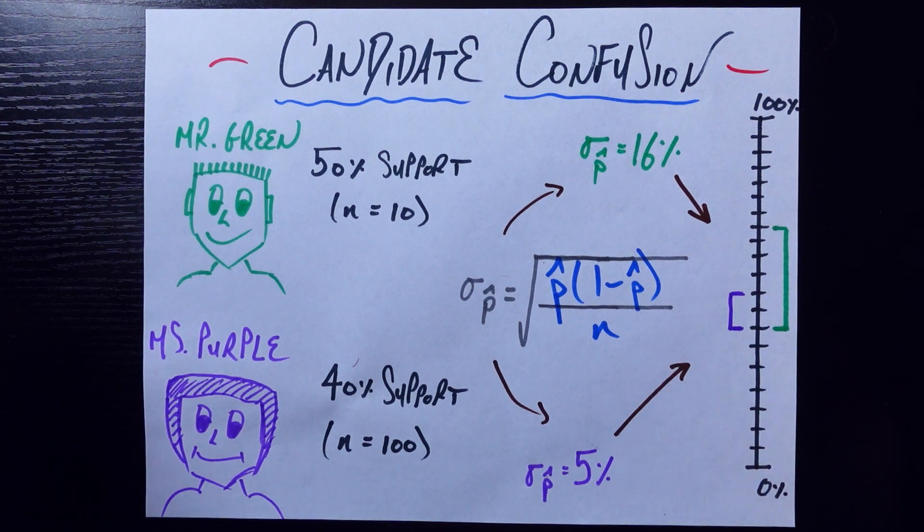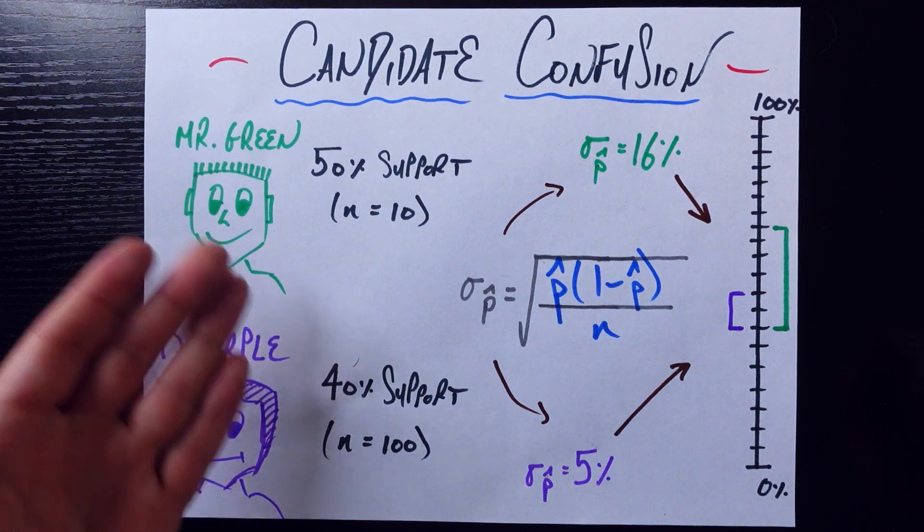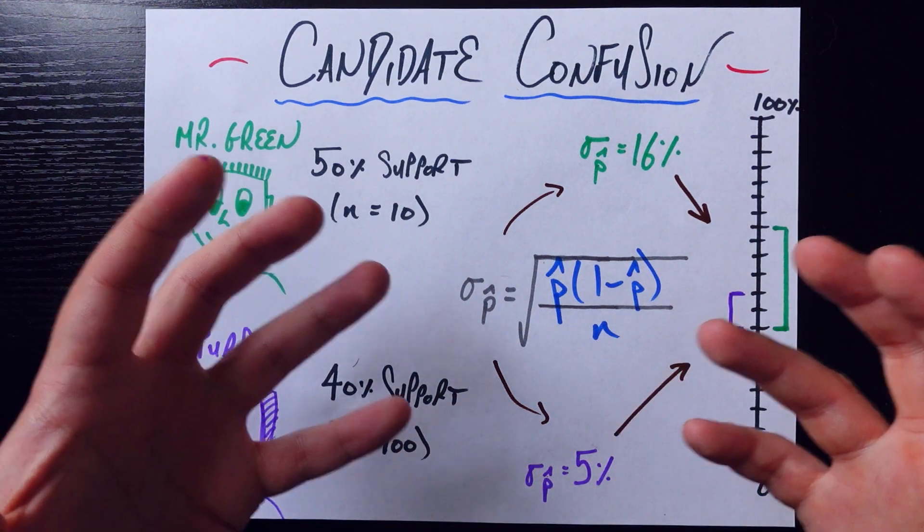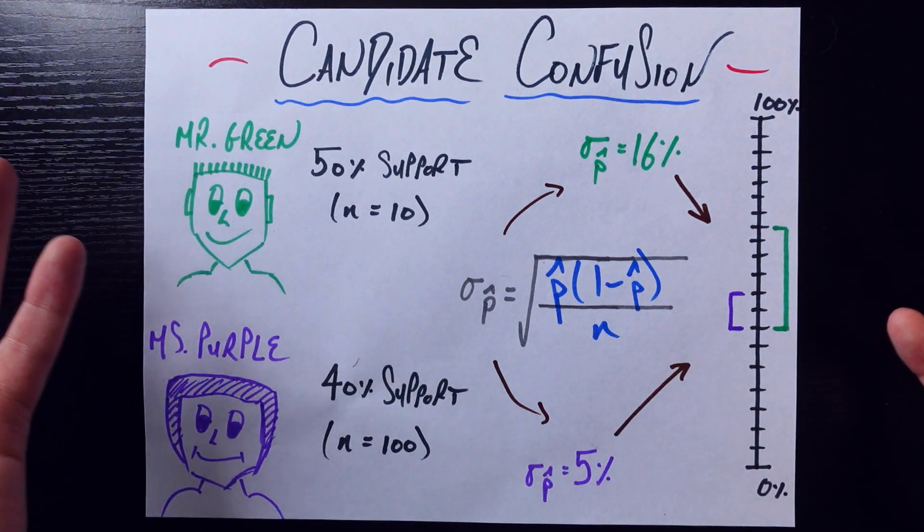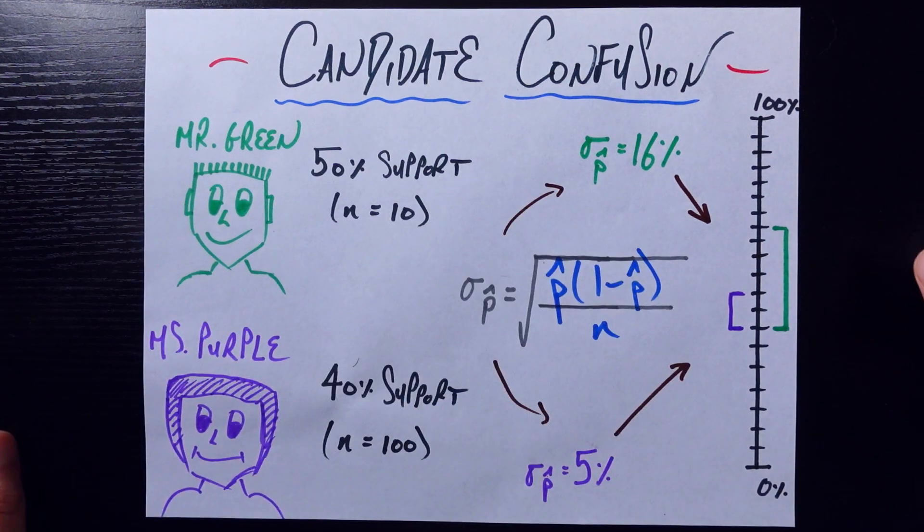And what that means intuitively is that, actually, even though 50% is higher than 40%, once we take this uncertainty into account, we actually don't know, we have no evidence, really, to say which candidate is preferred. Notice these ranges overlap by quite a bit.